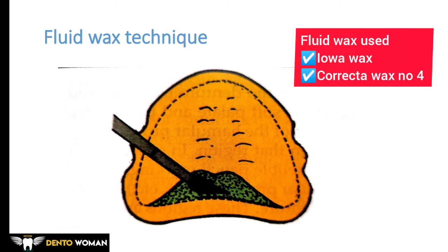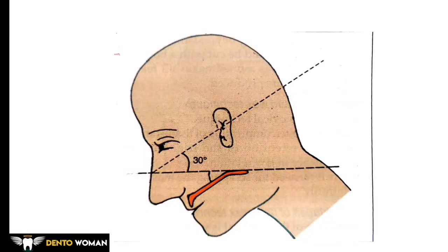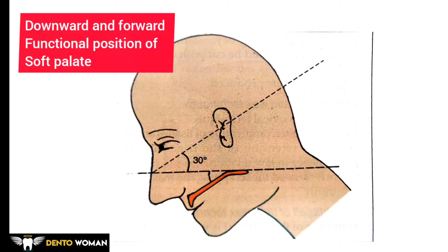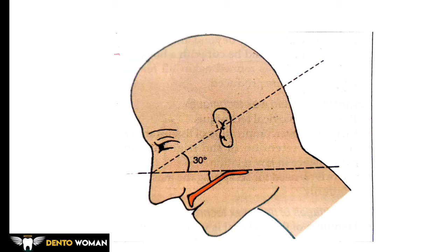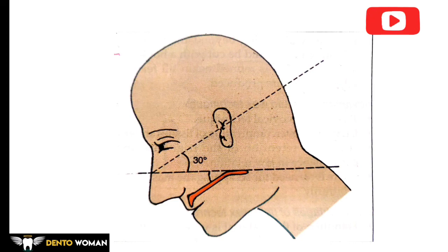The wax is usually applied in excess and cooled below mouth temperature so that it gains resistance to flow. The patient's head should be positioned such that the Frankfort horizontal plane is 30 degrees below the horizontal plane — only at this position is the soft palate at its maximal downward and forward functional position. The patient's tongue should be positioned at the level of the mandibular anteriors. After positioning the head and tongue, the impression tray is inserted and the patient is asked to make rotational movements of the head without altering the plane, to record the functional movement of the palate.